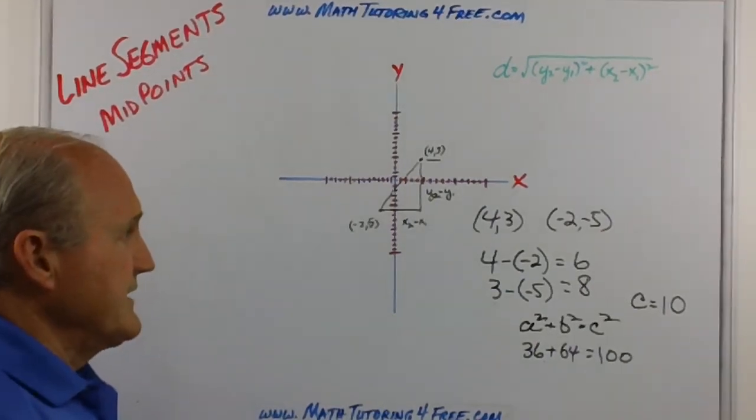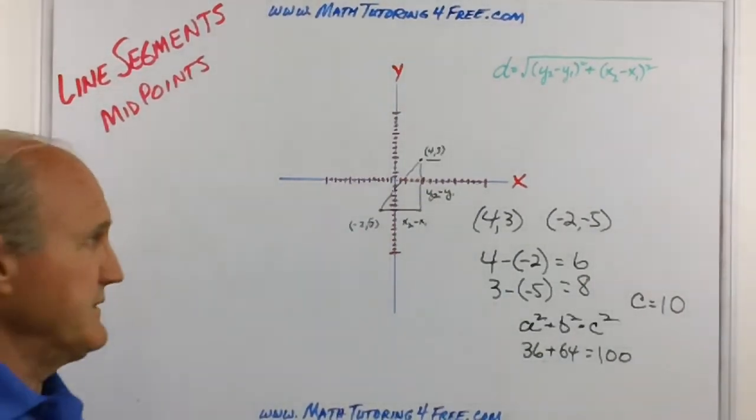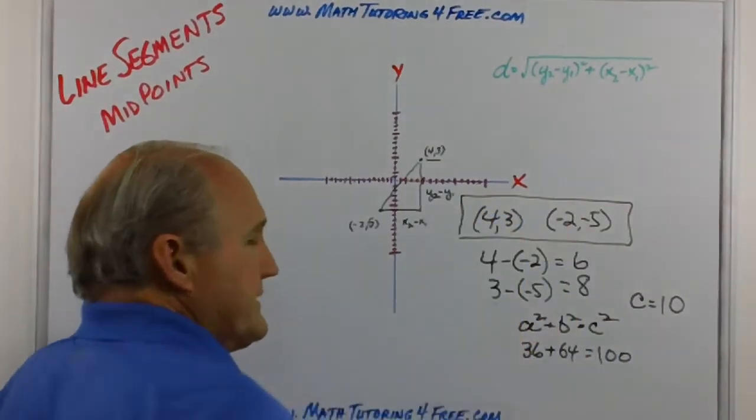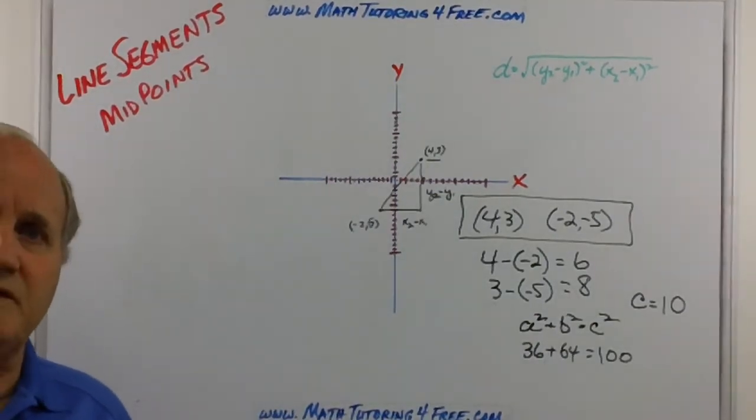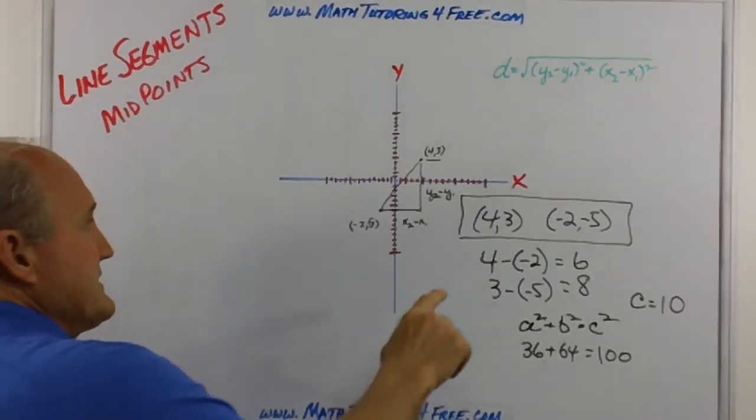The second thing I'd like to point out is midpoints. Let's just take these two points and to find the midpoint, the midpoint obviously is the halfway point, it's a point in the middle between those two points. And I think the easiest way to remember that is the average. When we want to find the average of 10 items we add them up, divide by 10, that gives us the average. Well that's all the midpoint is, it's the average between the two points.